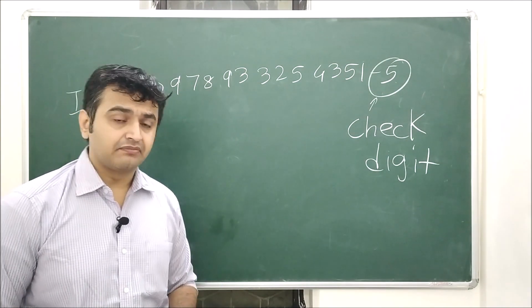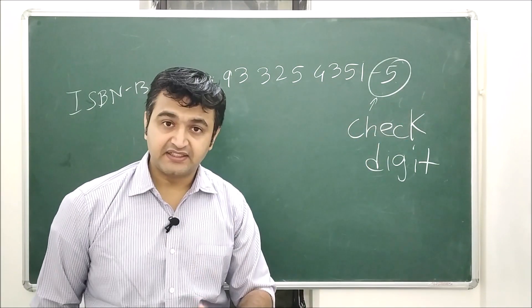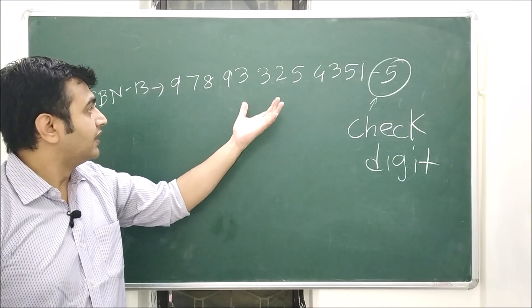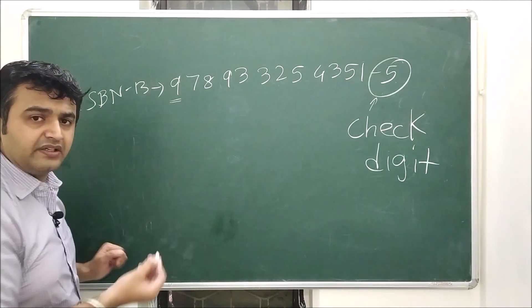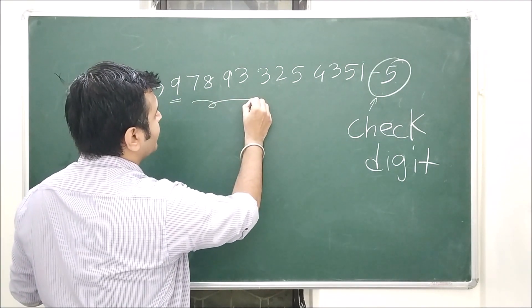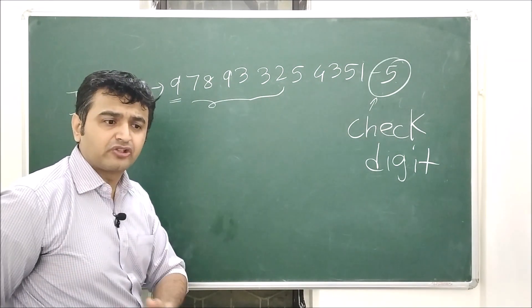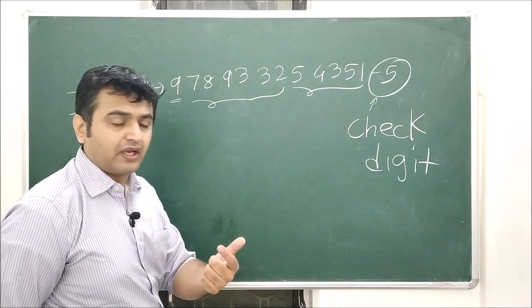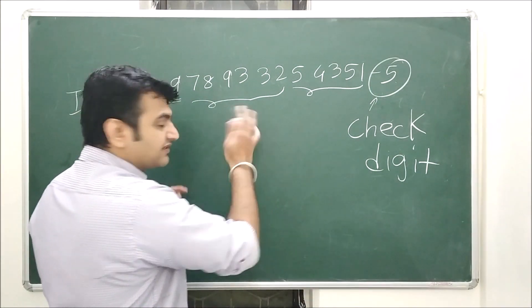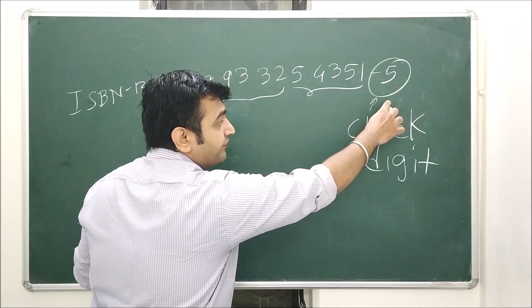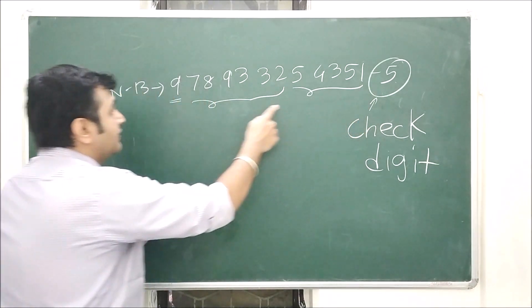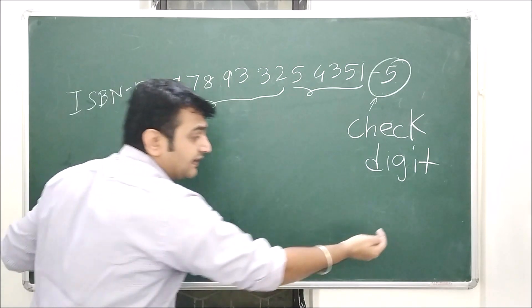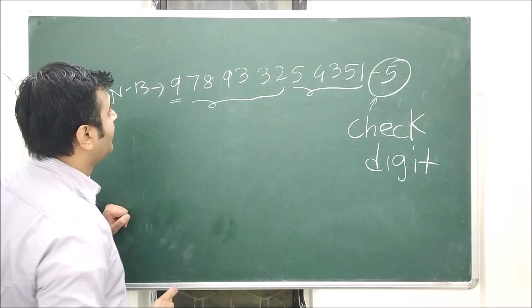The check digit is not related to the product itself. For example, the first digits may represent the country of origin, the next group the distributor or publisher, and another group the author and related details — but the last one is not related to the product. For ISBN 13, it depends on the previous 12 digits; for ISBN 10, the last digit depends on the previous 9 digits.